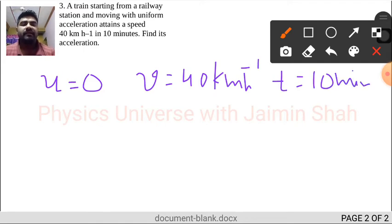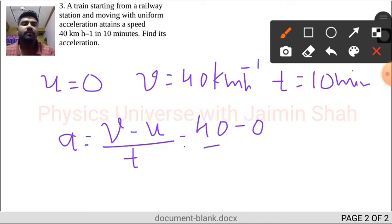Find its acceleration. So the acceleration formula is simple: v minus u upon t. What is v? 40 minus 0 upon 10. Remember, this 10 is in minutes, we have to convert it into hours, so divide by 60.